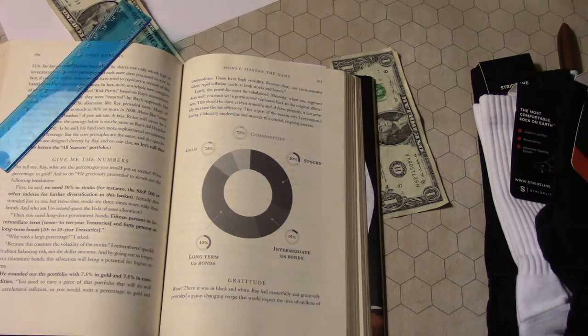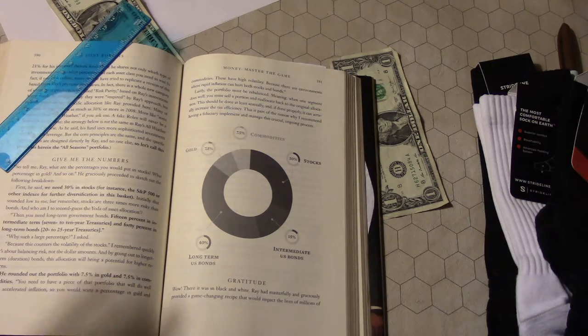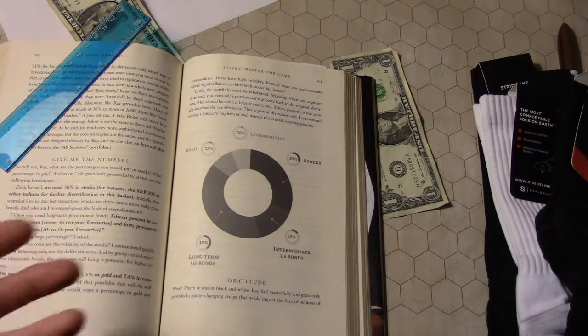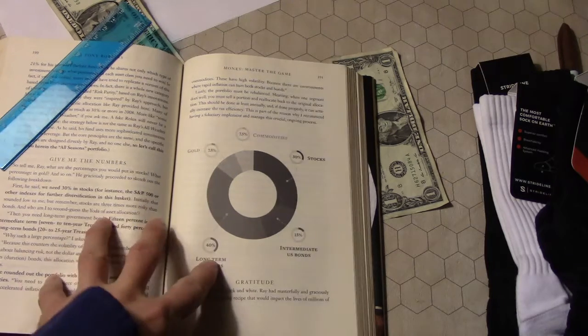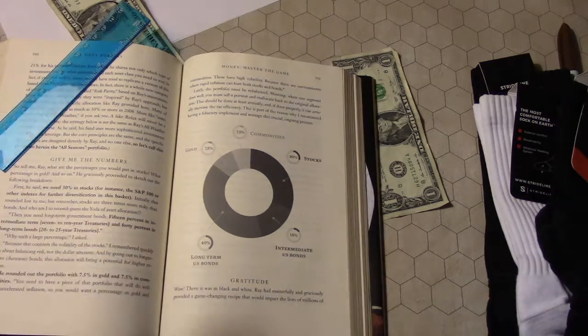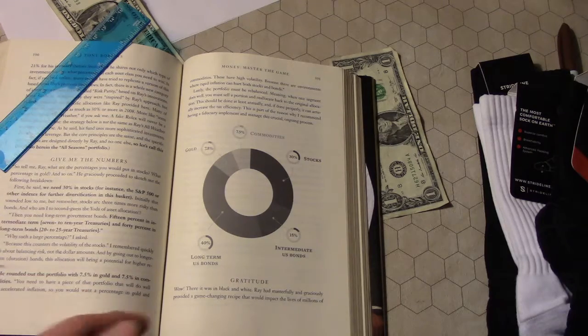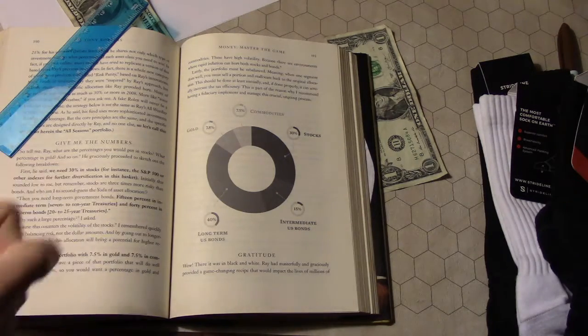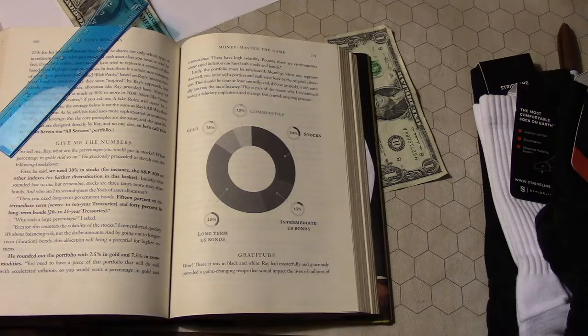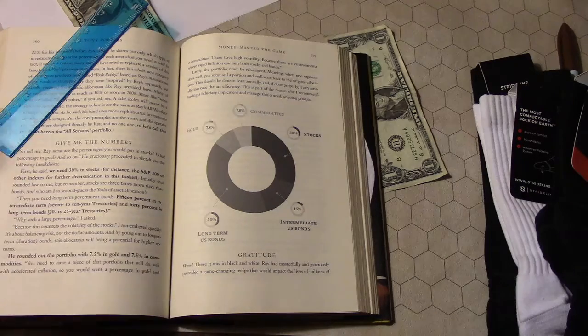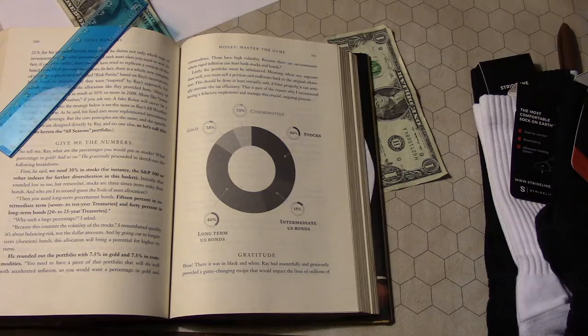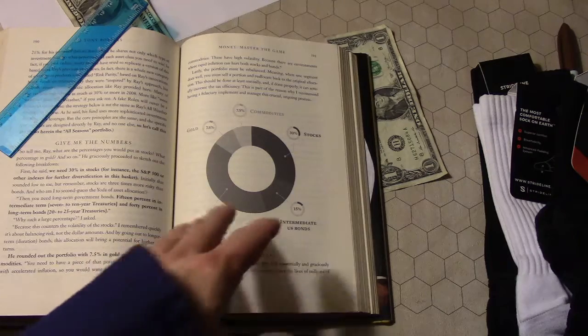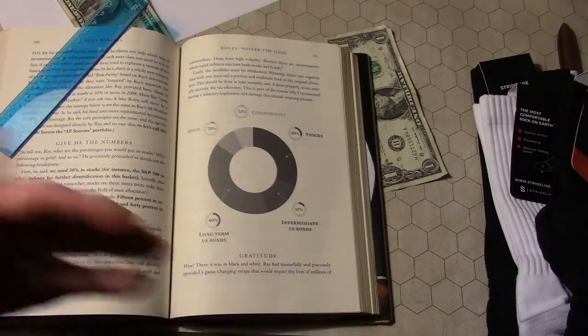He's interviewing someone named Ray Dalio, I think that's how you pronounce his name. A hedge fund manager who manages like $160 billion as of the writing of this book in 2014. So this guy might know a thing or two about asset management. But even he says it's really complex what he does for his clients, and he uses leverage and other things that most normal investors wouldn't have access to.